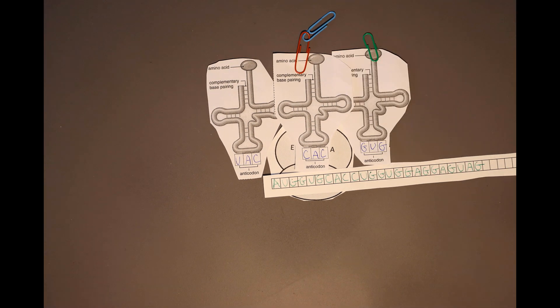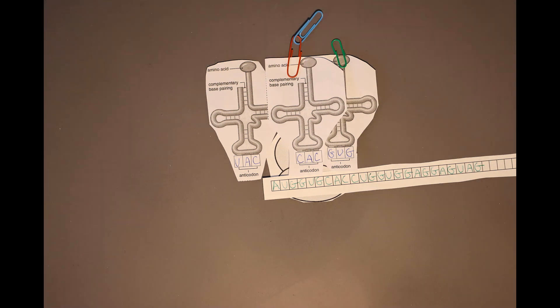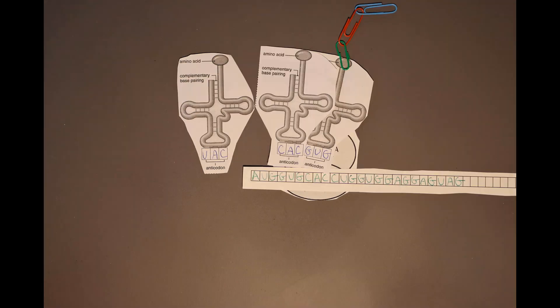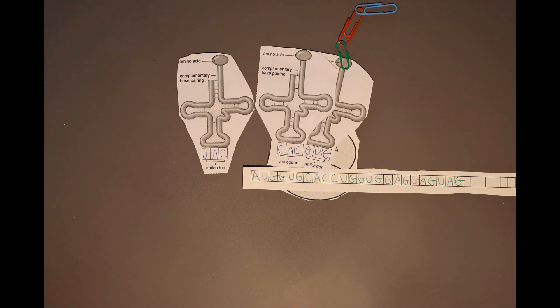From this point, the process repeats. We're going to take the two amino acids on the tRNA in the P site, and we're going to transfer those to the amino acid on the A site, resulting in a blue, red, and green paperclip combination, or amino acids, attached to the tRNA in the A site. In a real cell, these transfers and attachments of amino acids are controlled by enzymes.